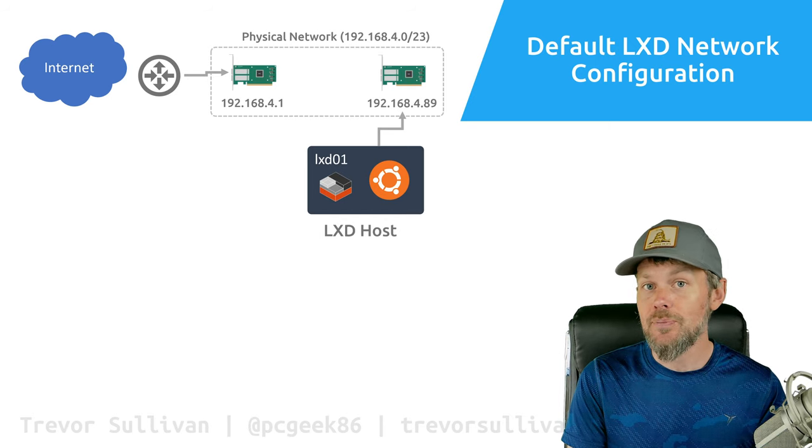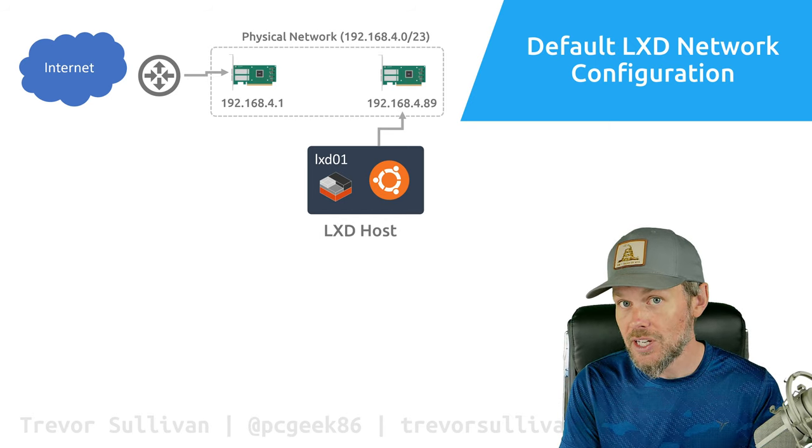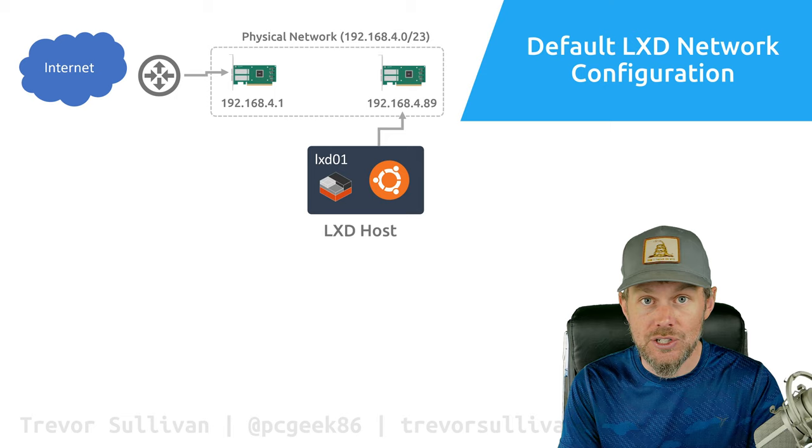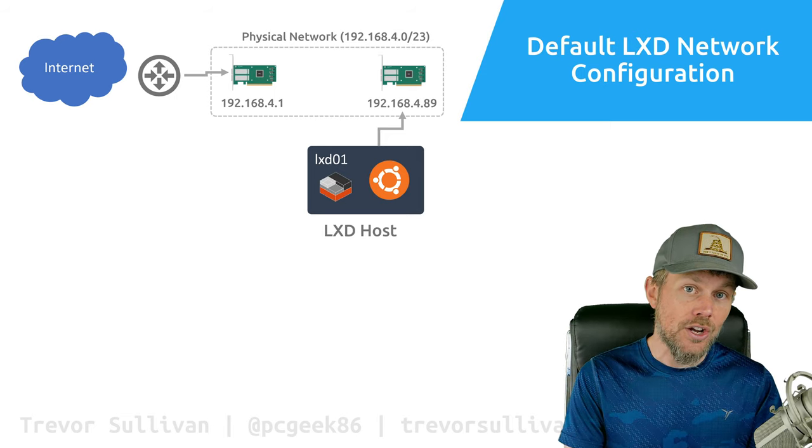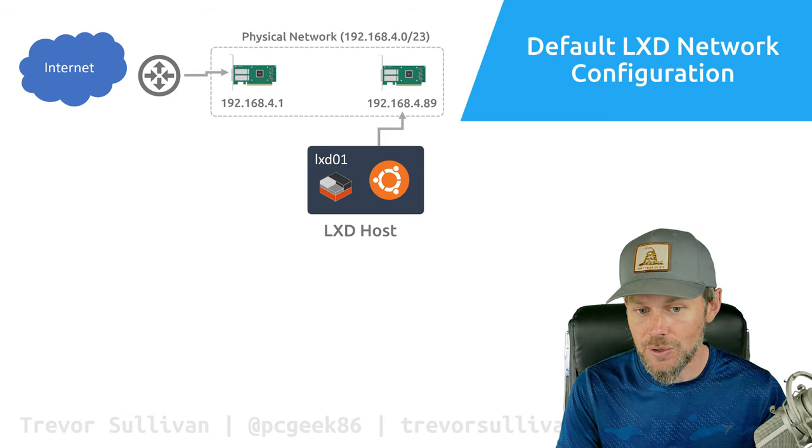When we talk about LXD, you're going to have a machine — probably a bare metal machine, but it could also be a virtual machine running on something like Hyper-V or even on top of LXD itself. That machine will have a physical network interface attached to your network with an IP address that can directly communicate with other devices on your network, including your router's internal interface. The LXD host running Ubuntu Linux will have access to the router to route out to the internet, and the router can also communicate directly with services running on the LXD host.